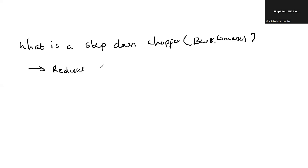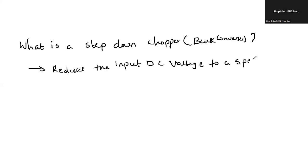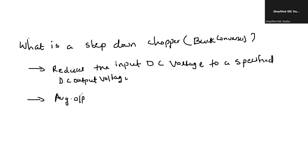It reduces the input DC voltage to a specified DC output voltage. Here, in the case of step-down chopper, the average output voltage is less than input voltage.